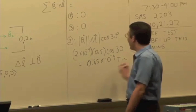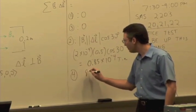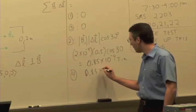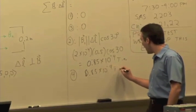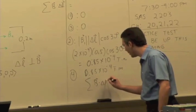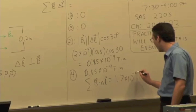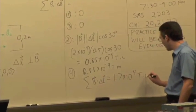And then, as we said, the bottom segment 4 is going to give you the exact same thing. So in the end, you can finally add them all up and say that the sum of all those B dot delta Ls gives us 1.7 times 10 to the minus 4 Tesla times meters.